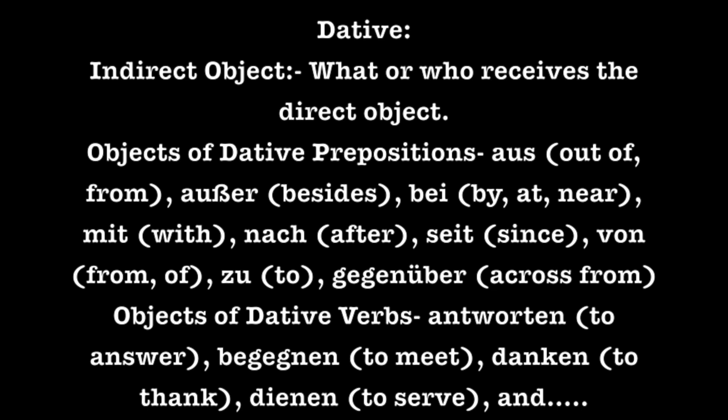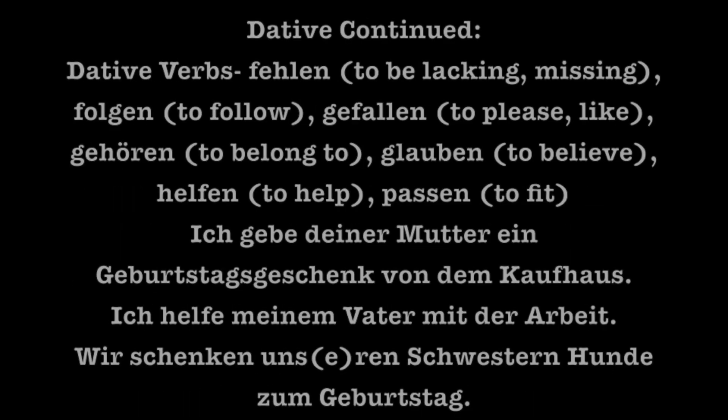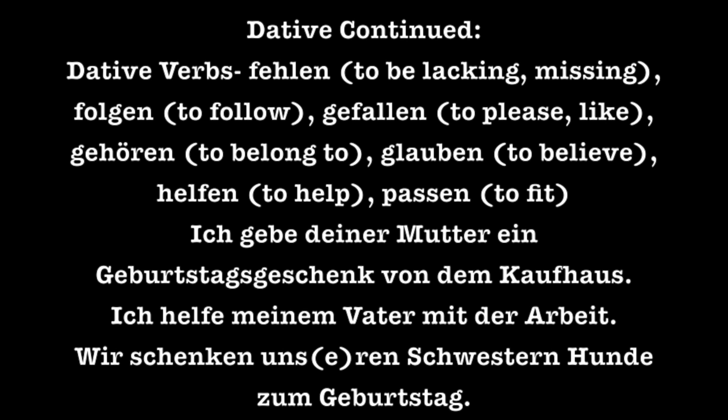We can also use the dative case with objects of dative verbs. Some examples of dative verbs would include antworten (to answer), begegnen (to meet), danken (to thank), dienen (to serve), fehlen (to be lacking or missing), folgen (to follow), gefallen (to please or like), gehören (to belong to), glauben (to believe), helfen (to help), and passen (to fit). These verbs are known as dative verbs because they take the dative case instead of an accusative for their object.